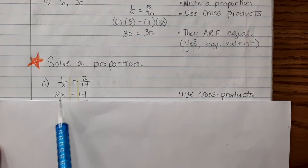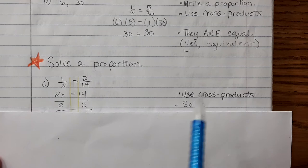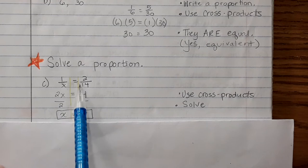Now just solve your equation. x is multiplied by 2, so we divide by 2. And solve, we get x equals 7. In other words, 1 over 7 is the same as 2 over 14.